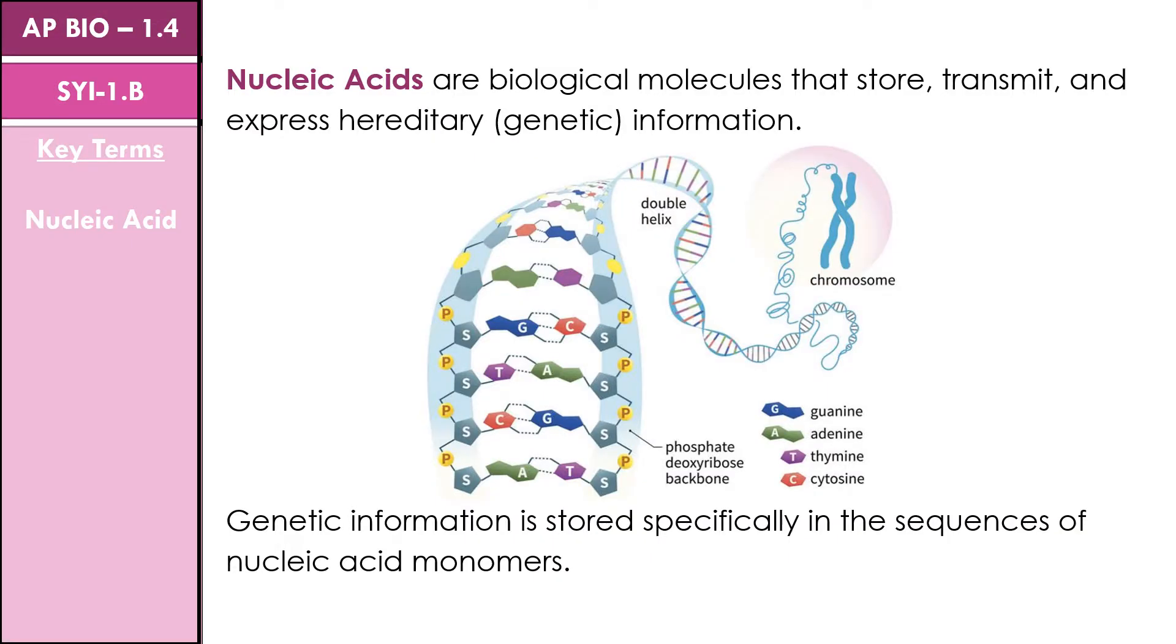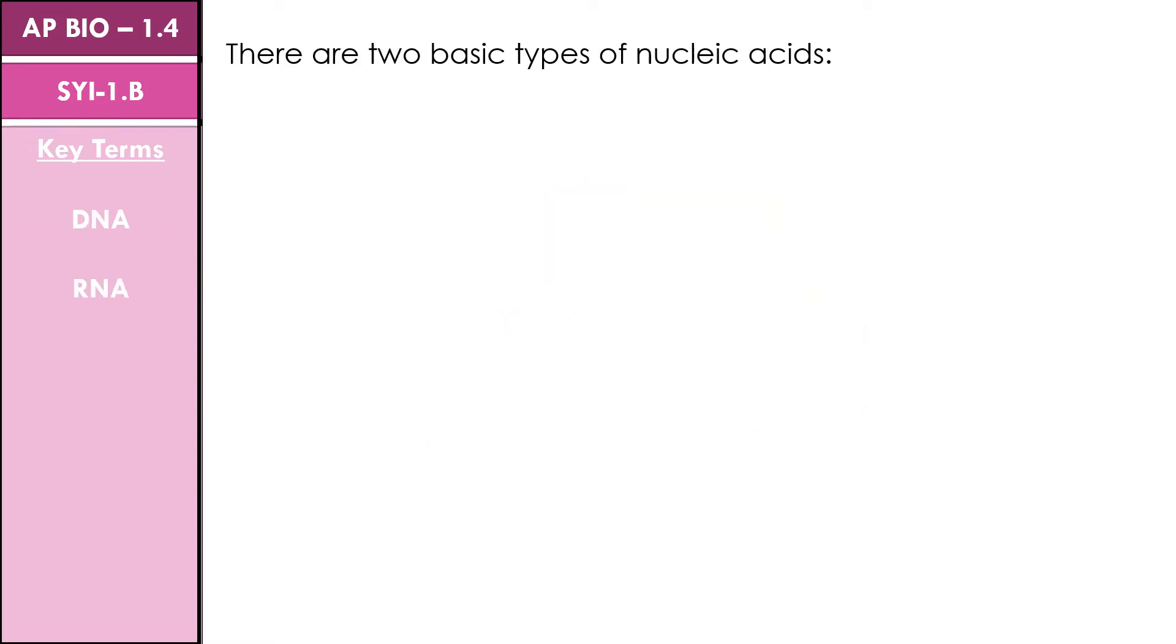Nucleic acids are polymers that store, transmit, and express hereditary or genetic information. This information is encoded in the sequences of monomers that make up nucleic acids. There are two types of nucleic acids.